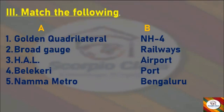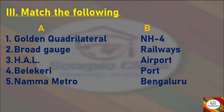Now let's continue with Match the Following. We have Column A and Column B — the questions are in Column A and the matched answers are in Column B. First: Golden Quadrilateral — NH4. Next: Broadgate — Railways. Next: HAL — Airport. Next: Belakiri — Port. Next: Namma Metro — Bengaluru. These are the matched answers for this section.